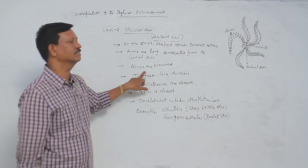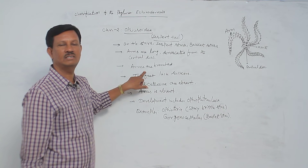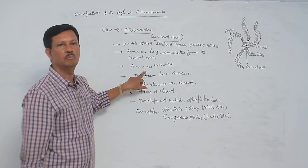And arms are branched. There are five arms are present. Sometimes these arms are also branched.